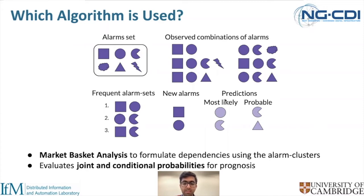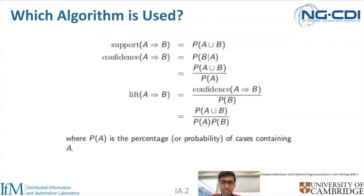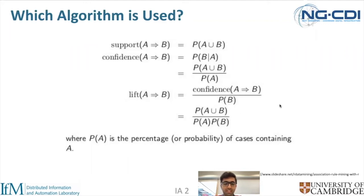We are evaluating the joint probability and the conditional probability. The joint probability tells us, out of a given set of alarms, what is the probability that a particular combination occurs. The conditional probability tells us, given a particular combination, what is the next alarm that is probable — so if you have a new alarm in the shape of a box, the most likely following prediction is a circle and then a pie. This slide shows the mathematical representation of market basket analysis. Support is the joint probability that two alarms occur together. Confidence is the probability that a new alarm could occur given a set of alarms already seen. Lift is a measure of evaluation of the algorithm's performance.